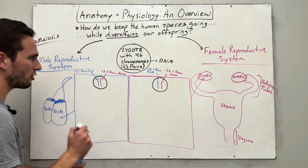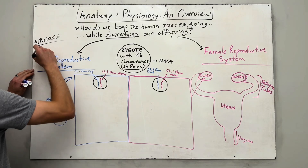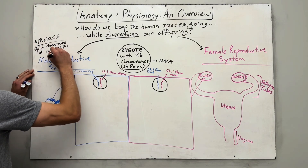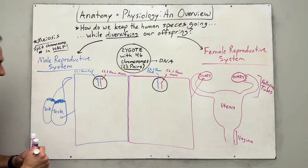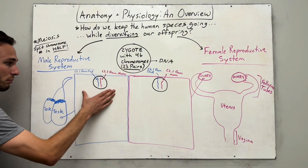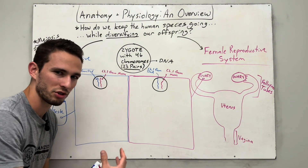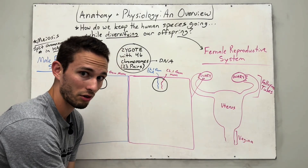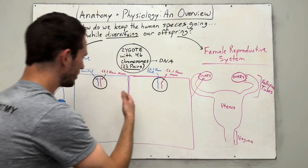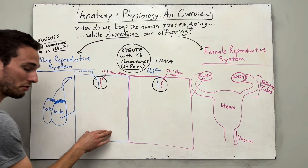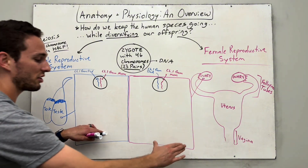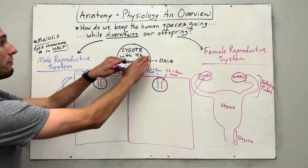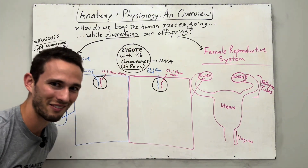Keep in mind the goal of meiosis: it's to split the chromosome number in half. This person has 23 pairs of chromosomes — that's 46. This person also has 23 pairs, 46 total. We want to split this one so that there's 23 at the end, so we can combine it with the 23 from mom, and then make the 46 total in the baby.